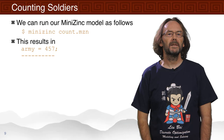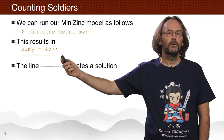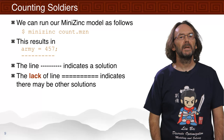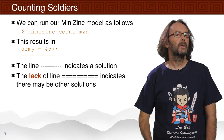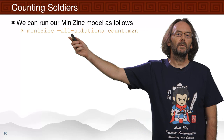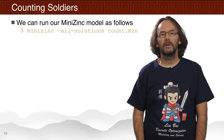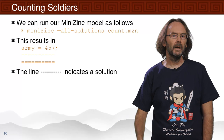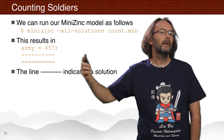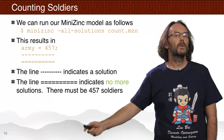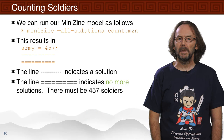We have our line of ten dashes indicating that we found a solution, and we don't have a line of ten equals indicating there might be other solutions. There might be 457 soldiers left or there might be something else. So we run MiniZinc with all solutions on, asking it to print out all possible solutions. If we run it, we get that the army is 457 — that is the only solution. So the three heroes know there must be exactly 457 soldiers left in their army.